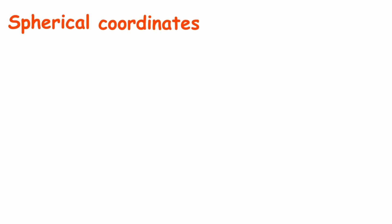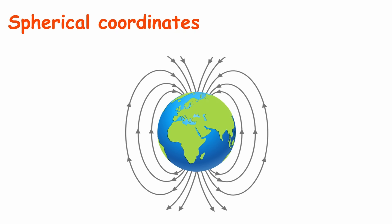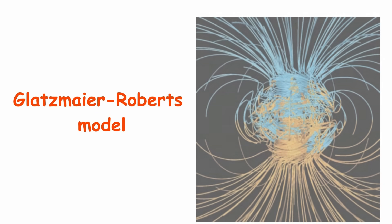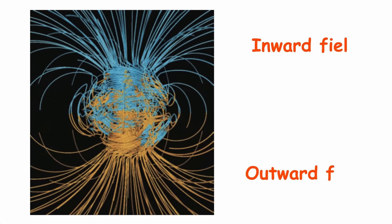Spherical coordinates are used in mathematical models of the Earth's magnetic field. This computer simulation, based on the Glatzmeier-Roberts model, shows magnetic lines of force, representing inward and outward field lines in blue and yellow, respectively.